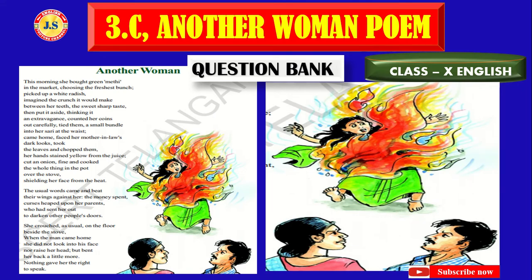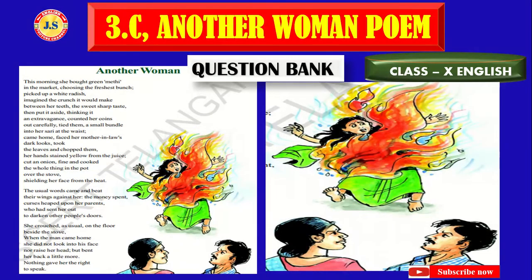In this poem, 'Another Woman', which was written by Miss Imtiaz Dharker, the poetess emphasizes the domestic violence happening against women all over India. There is a lot of harassment and suffering occurring in the mother-in-law's house. The woman suffers a lot — there are many women, not only one, who are harassed by their mother-in-law all over India.